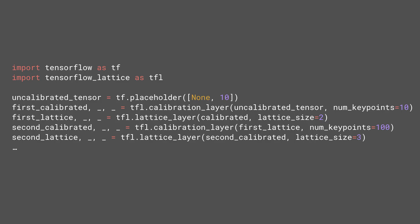TensorFlow Lattice can also help you build customized models by providing calibration and lattices as layers or as individual TensorFlow operators. For instance, you could extend your already existing model with a lattice layer that connects your model and monotonic inputs and have a mixed monotonic model.